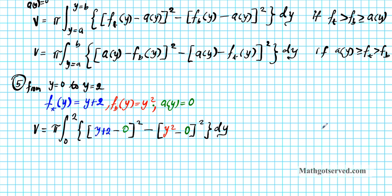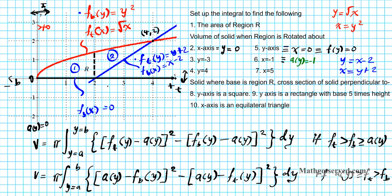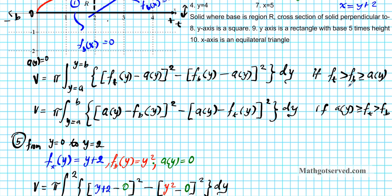Now let's look at question number 6. We have x equals negative 1, which is equivalent to our axis of rotation a of y equals negative 1. Where is this line relative to the two functions? Remember, we're oriented along the y-axis — this line x equals negative 1 is to the left of both functions, so it's at the bottom. Since the functions are bigger than the axis of rotation, we use the same first formula.